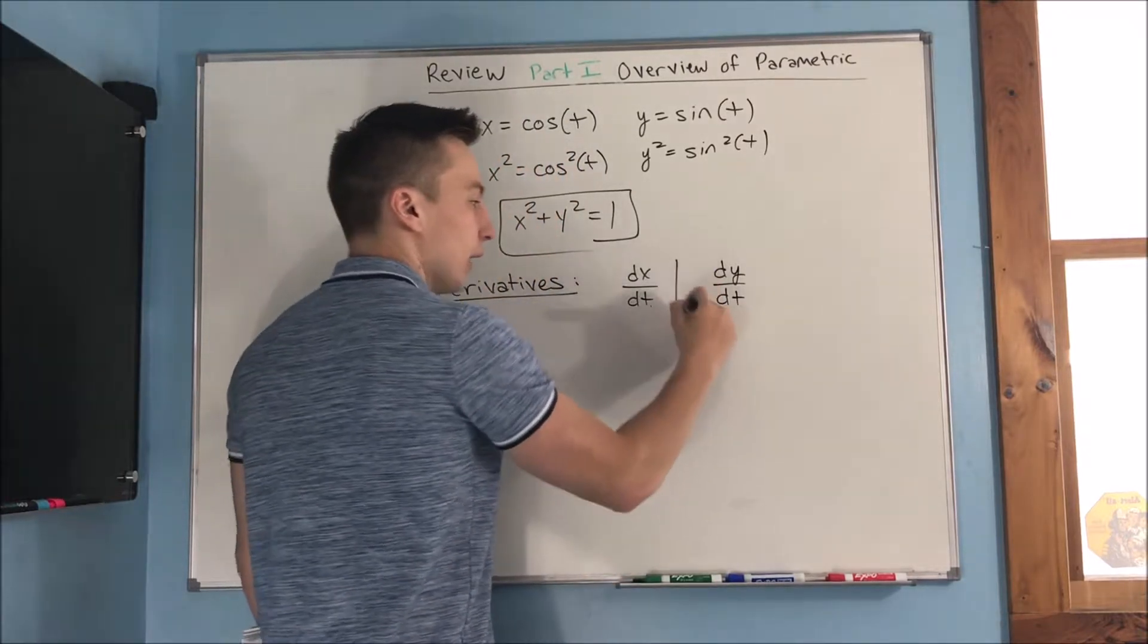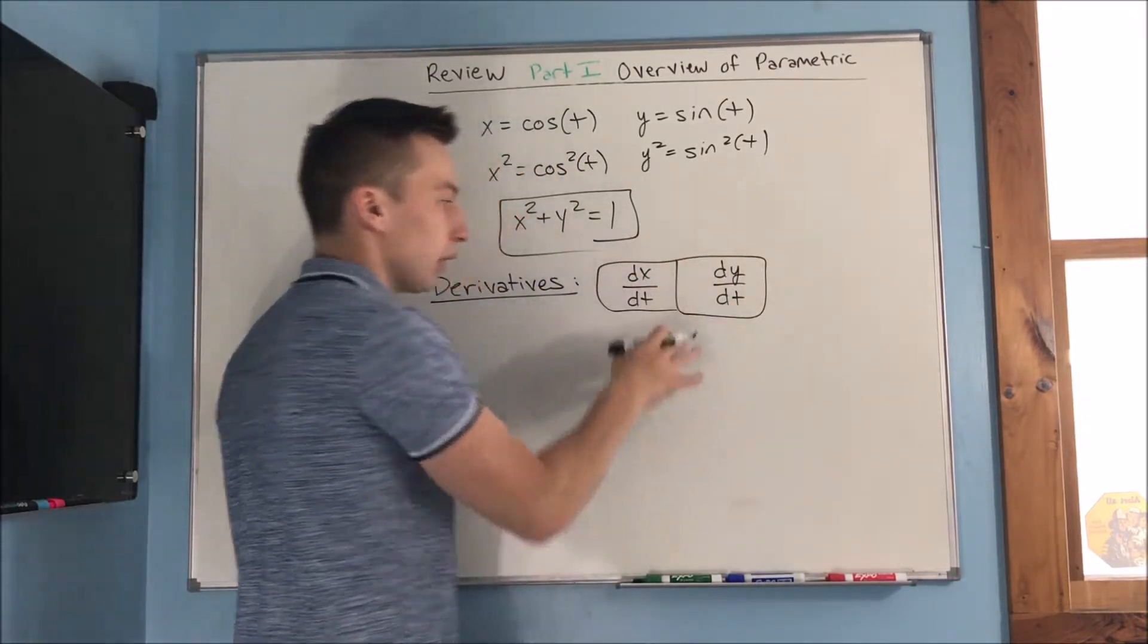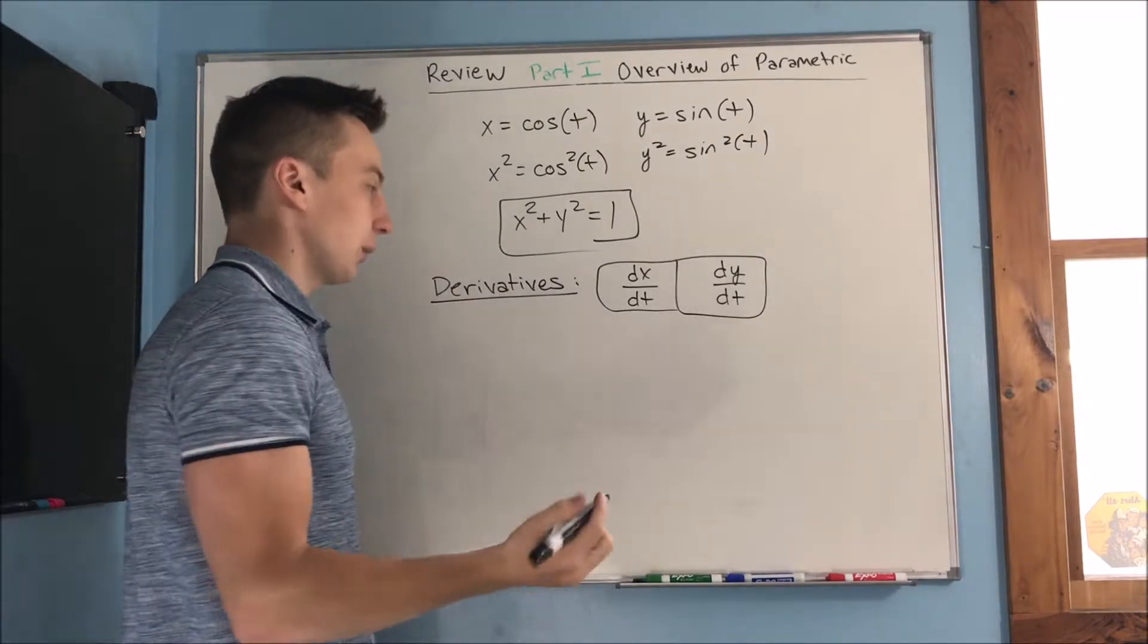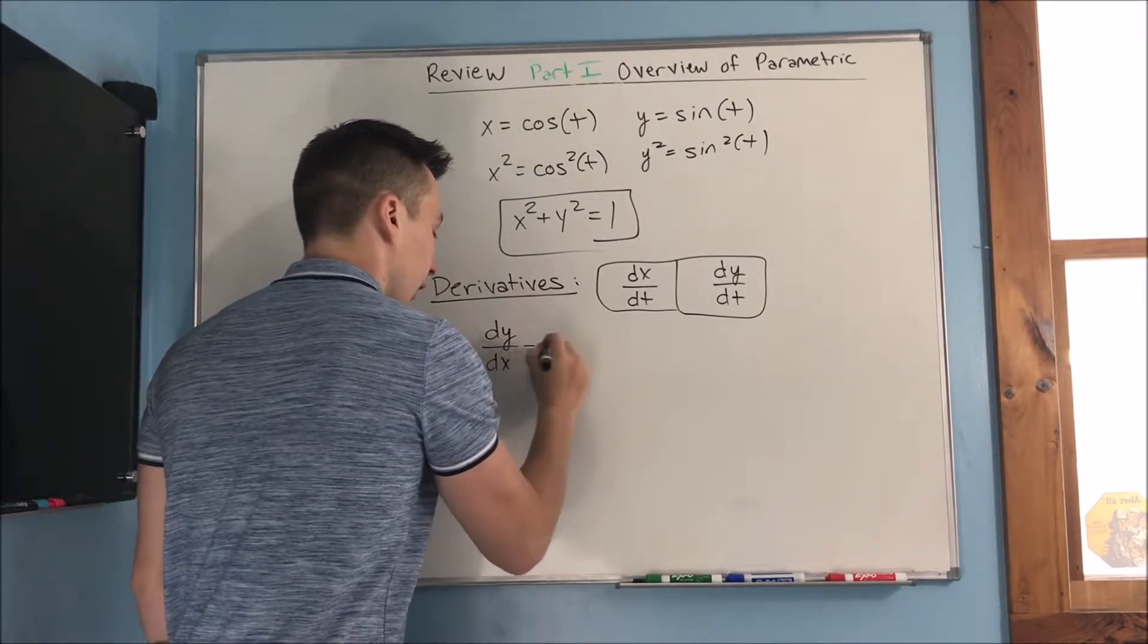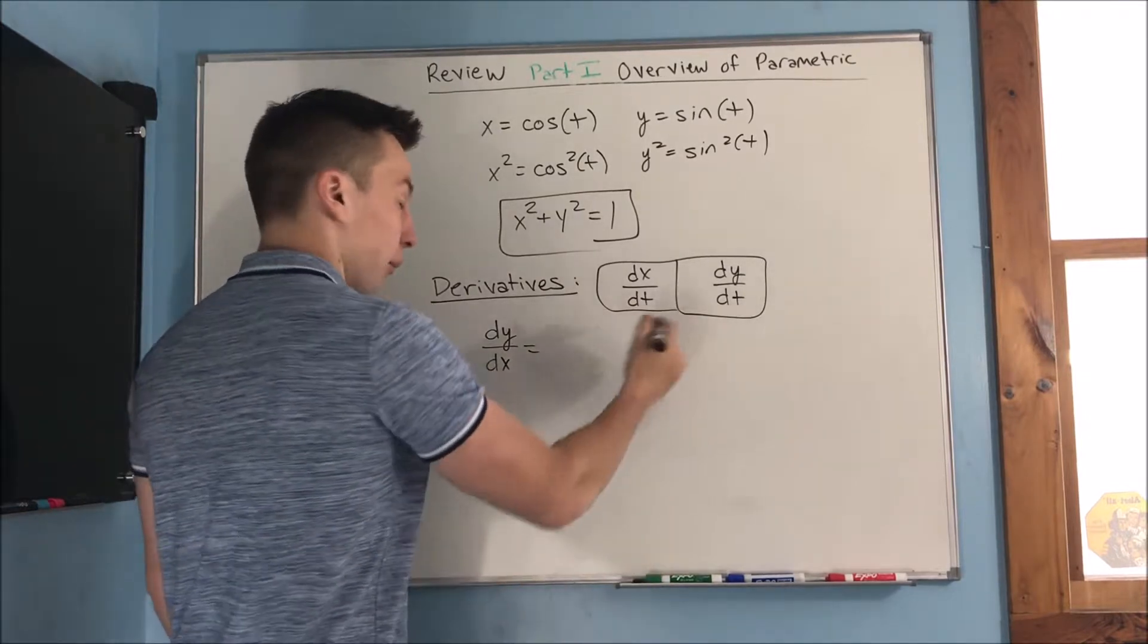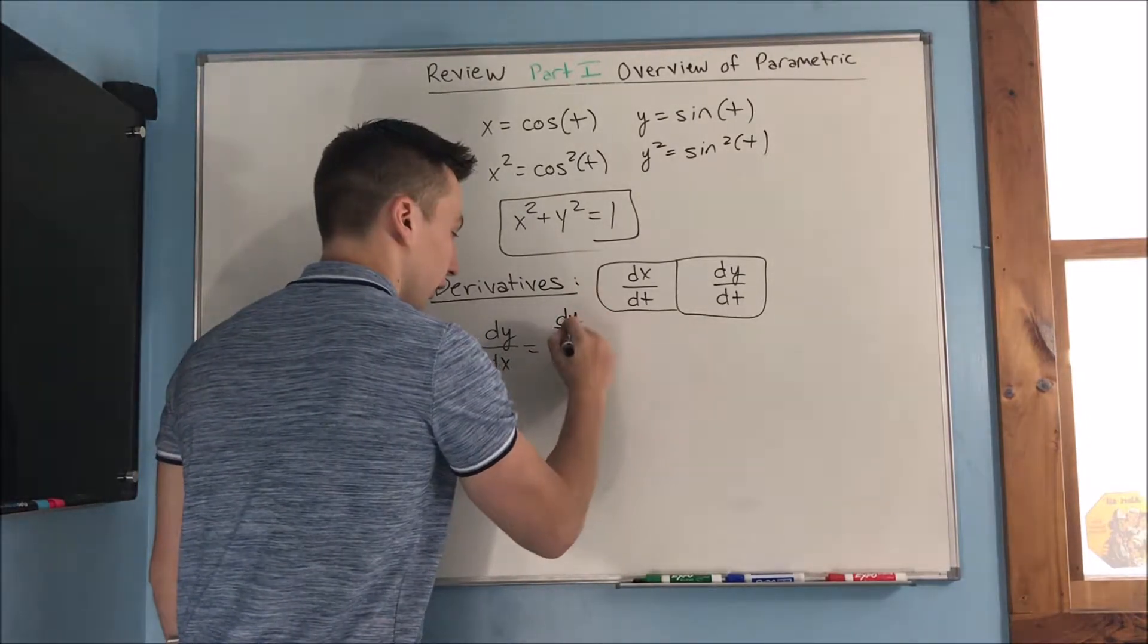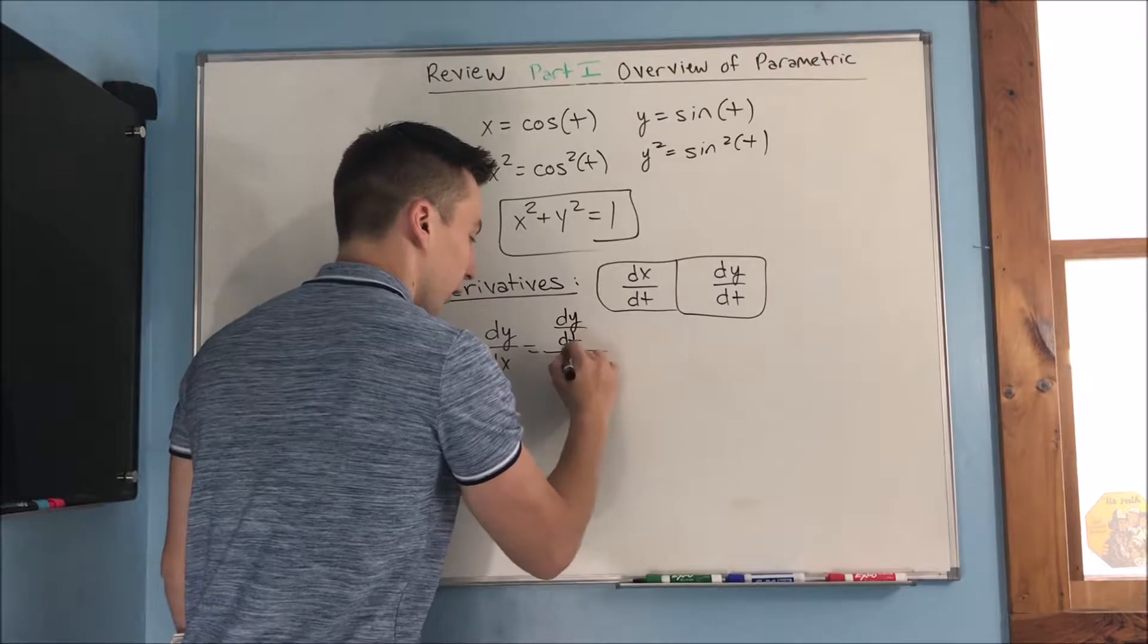And we can put these together to get dy dx, which is our actual derivative, the one that we can use. And how we do this is by putting dy dt over dx dt.